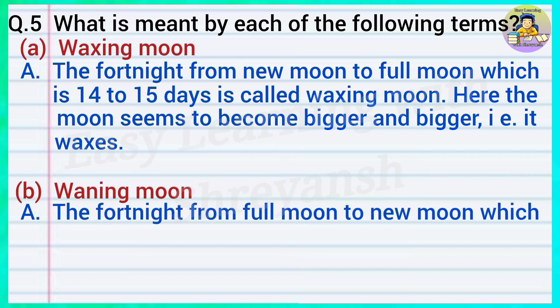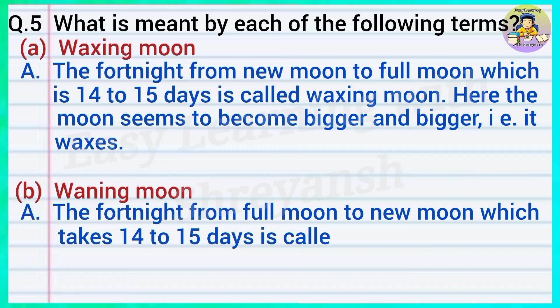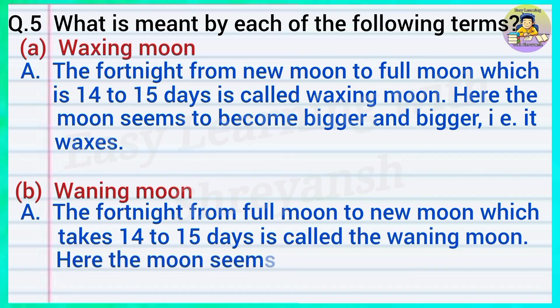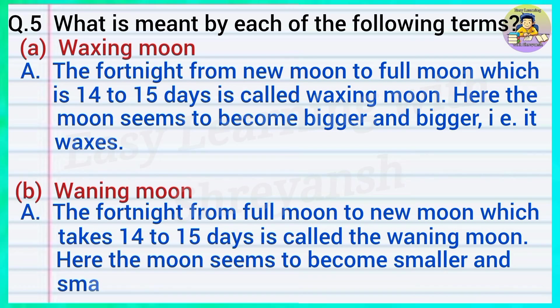B — waning moon: The fortnight from full moon to new moon, which takes 14 to 15 days, is called the waning moon. Here the moon seems to become smaller and smaller, that is, it wanes.